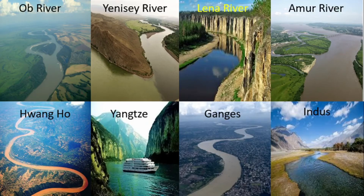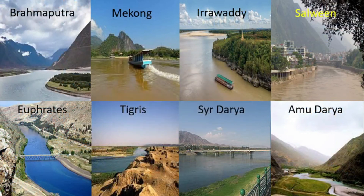Look at these colourful relevant pictures under each river — they are really magnificent. Large river systems: Ob River, Yenisei River, Lena River, Amur River, Hoangho, Yangtze, Ganges, Indus, Brahmaputra, Mekong, Irrawaddy, Salween, Euphrates, Tigris, Syrdarya, Amudarya.